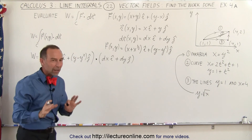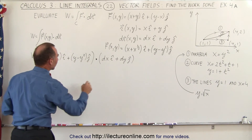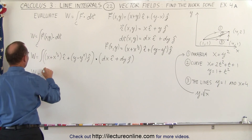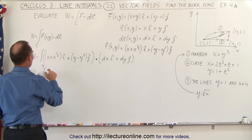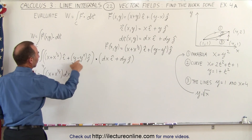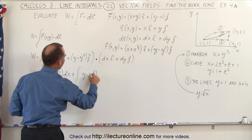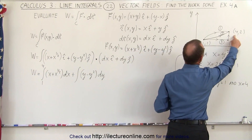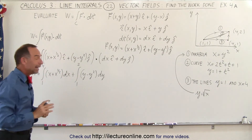When we multiply these out via the dot product, we get two separate integrals. The work done equals the integral from 1 to 4 of (x plus x to the one-half power) dx — since x changes from 1 to 4 — plus the integral from 1 to 2 of (y minus y squared) dy, since y changes from 1 to 2 along the path from (1,1) to (4,2).